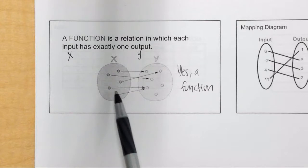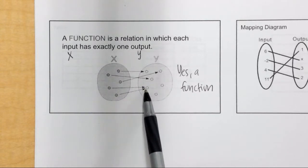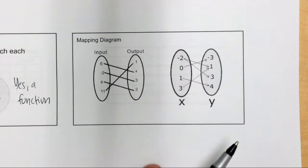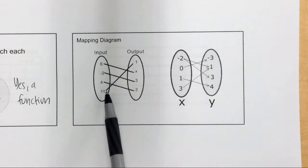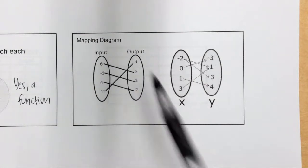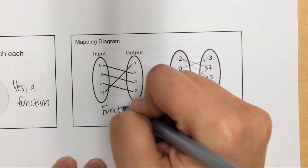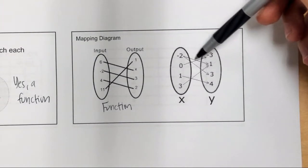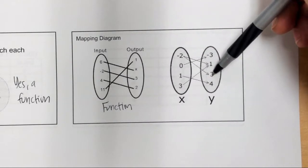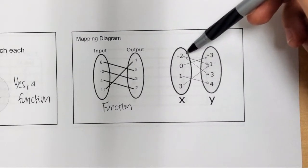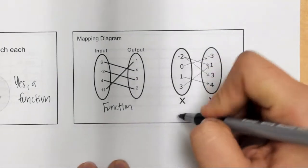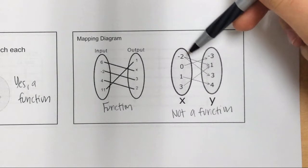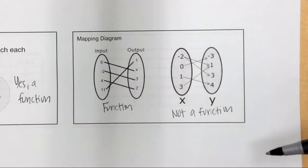Here are a couple more examples so we can see the difference. In this first one, each x value goes to exactly one y value — so yes, this is a function. In the second one, I have this x value of negative two, but it is connected to two different y values. So I have an input that goes to two y values, and that makes it not a function. If you see an x with two y's, that tells you it's not a function.